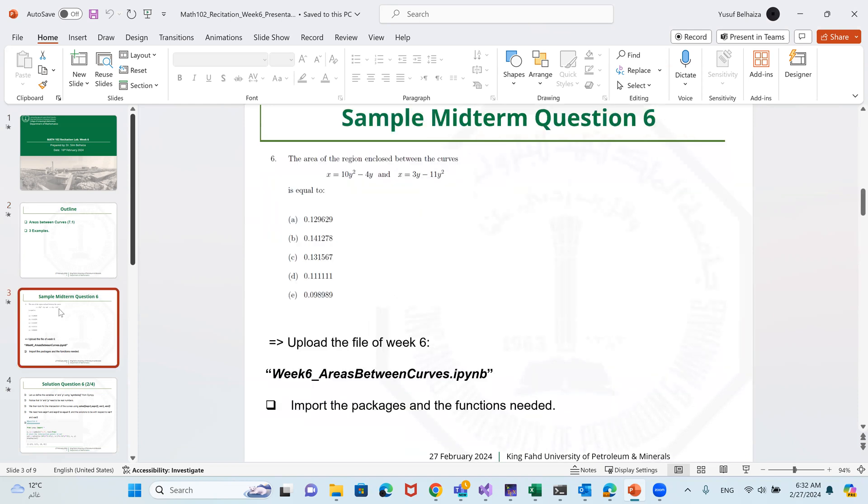First of all, we'll start with this sample midterm question, question number six. It says the area of the region closed between the curves x equals 10y squared minus 4y and x equals 3y minus 11y squared is equal to, and we have five choices. And of course we have the week six file upload process.